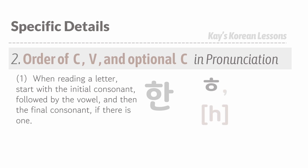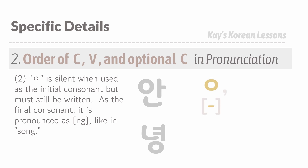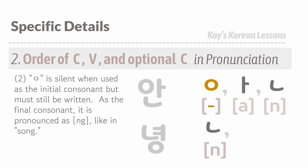When pronouncing Hangul syllables, the order follows a consonant, a vowel, and optionally a final consonant. 이응 is silent as the initial consonant but still must be written. As the final consonant, it is pronounced as 응, like in 'song.'